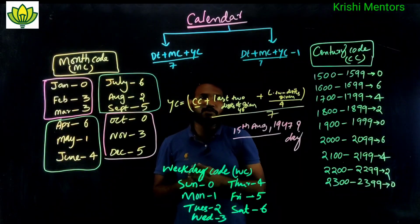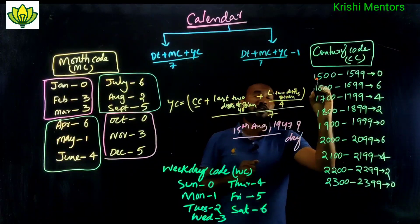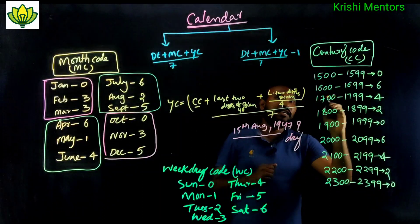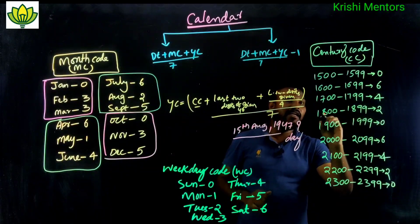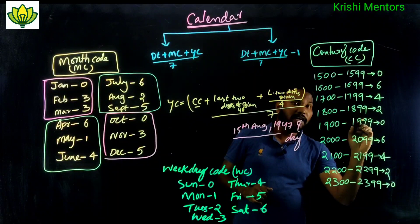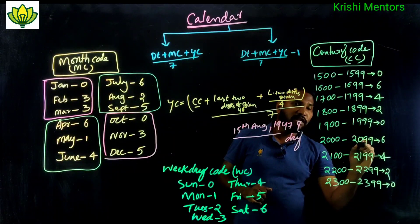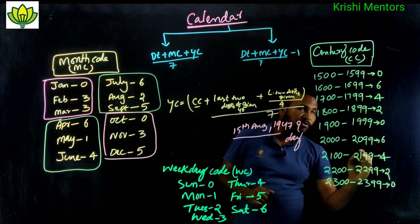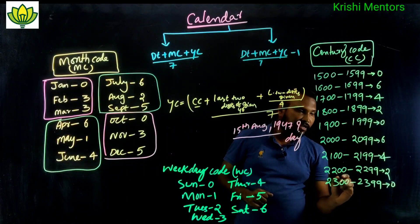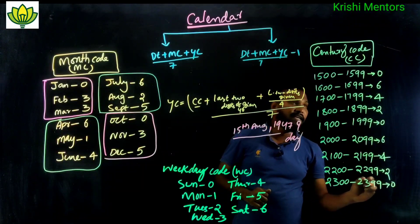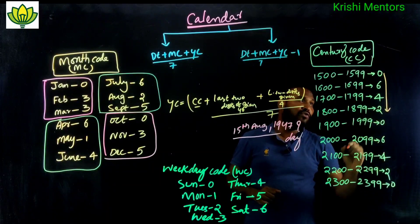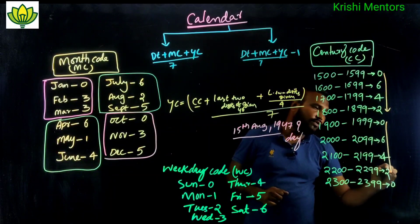The century codes are: 1500–1599 = 0, 1600–1699 = 6, 1700–1799 = 4, 1800–1899 = 2, 1900–1999 = 0, 2000–2099 = 6. The pattern repeats as 0, 6, 4, 2.